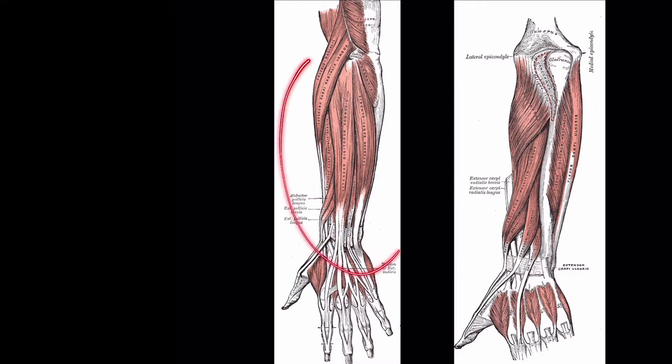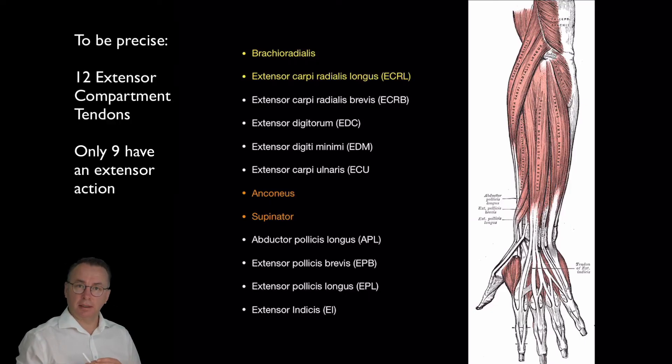This is the superficial layer and this is the deep layer of extensor tendons. As I said, there are 12 extensor tendons.